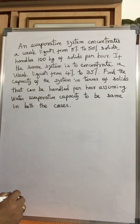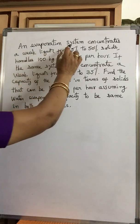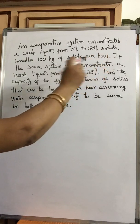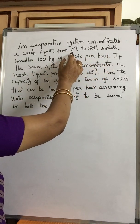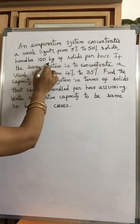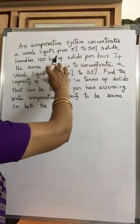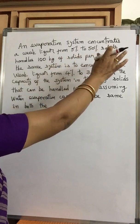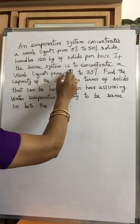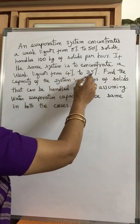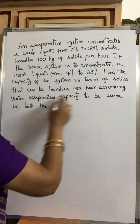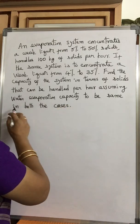We shall discuss one problem in evaporation. An evaporation system concentrates a weak liquor from 5% to 50% solids — solids here means the solute. Initially, concentration of the feed solution is 5% and it is to be concentrated to 50% solids. It handles 100 kg of solids per hour. If the same system is to concentrate a weak liquor from 4% to 35%, find the capacity of the system in terms of solids that can be handled per hour, assuming water evaporation capacity to be the same in both cases.